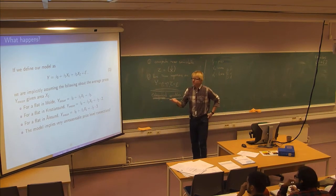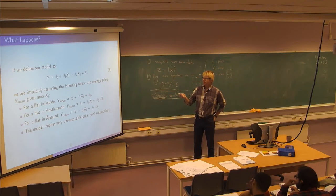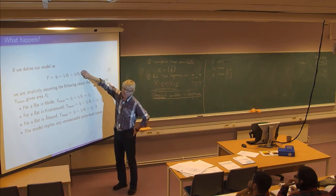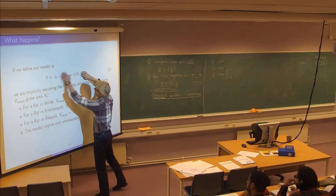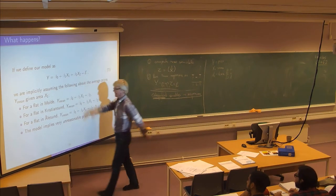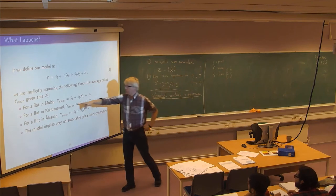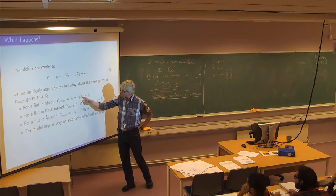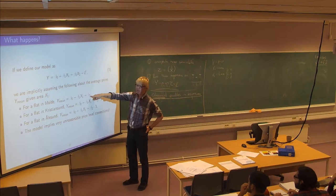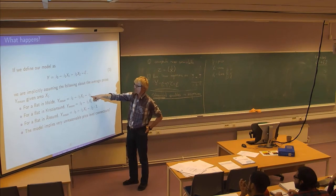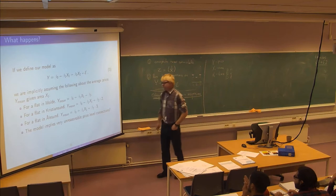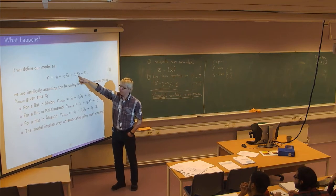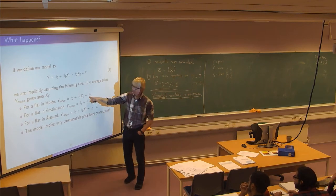Then you can write what this model says for the three towns. Ignoring the error term, what you get is the model's prediction for the mean price. For Molde it says the mean price should be beta zero plus beta one times the area — the square meter price times the area — and then some coefficient beta two, because x2 is one for Molde.